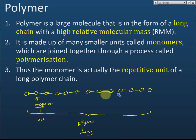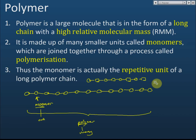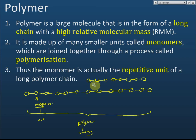The first type has all monomers of the same kind. Another type can have two different monomers — for example, represented by a circle and a square — alternating in a repeating pattern. So a polymer can be a repetition of one or two types of monomers, but you cannot have all different monomers. That is a brief introduction to polymers.